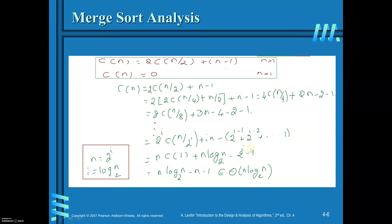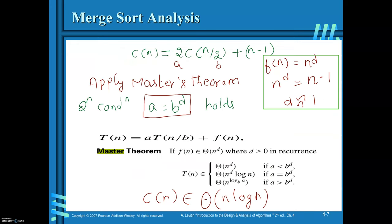Solving this recurrence relation gives N log N base 2 minus N plus 1, which belongs to Theta(N log N base 2). This recurrence relation was solved using backward substitution. Applying Master's theorem: A equals 2, B equals 2, and F(N) equals N minus 1, which is approximately N to the power D where D equals 1.